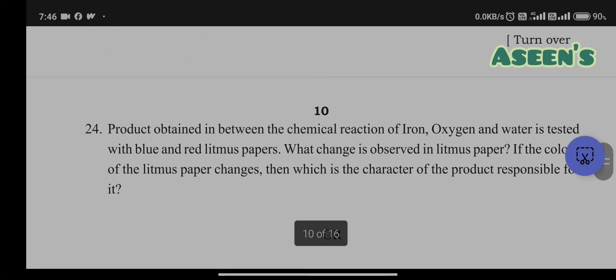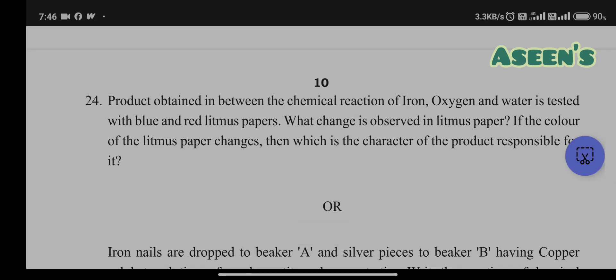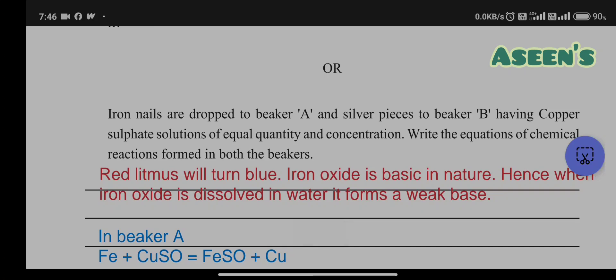Product obtained from the chemical reaction of iron, oxygen, and water is tested with blue and red litmus paper. What changes are observed? If the color changes, which character of the product is responsible? When you react iron with oxygen you get iron oxide. Iron oxide when dissolved in water gives iron oxide solution. Since iron oxide is basic in nature, red litmus paper turns blue and blue litmus paper shows no change. Hence, dissolved iron oxide gives a weak base solution.